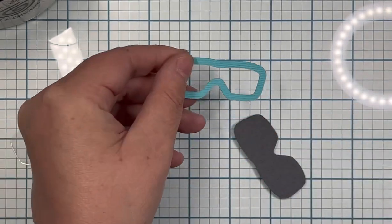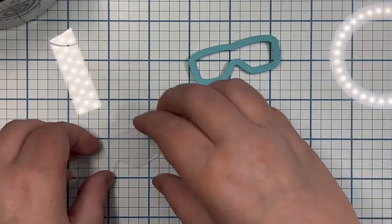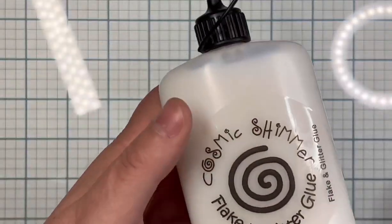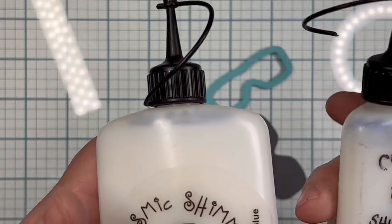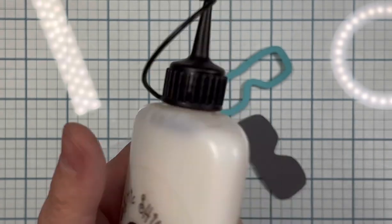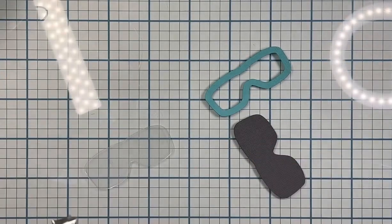All I do for this is add my Cosmic Shimmer Flaken Glitter Glue. It comes in two sizes, the sticker came off this one, and I refill it into the smaller bottle.